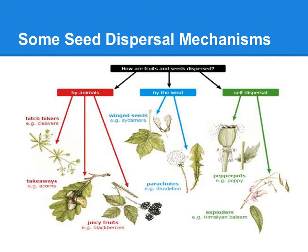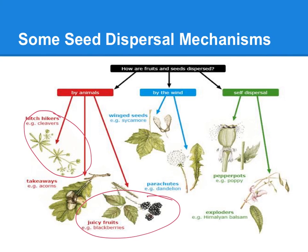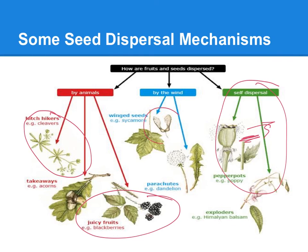As far as seed dispersal goes, we know juicy fruits are ones the plant wants animals to take away. Sometimes we have seeds that are sticky and hitchhike on fur. Sometimes we have self-dispersal — almost like little bombs that go off and pressure expels the seeds. And sometimes we have seed dispersal by wind, like those little maple helicopter seeds coming down.